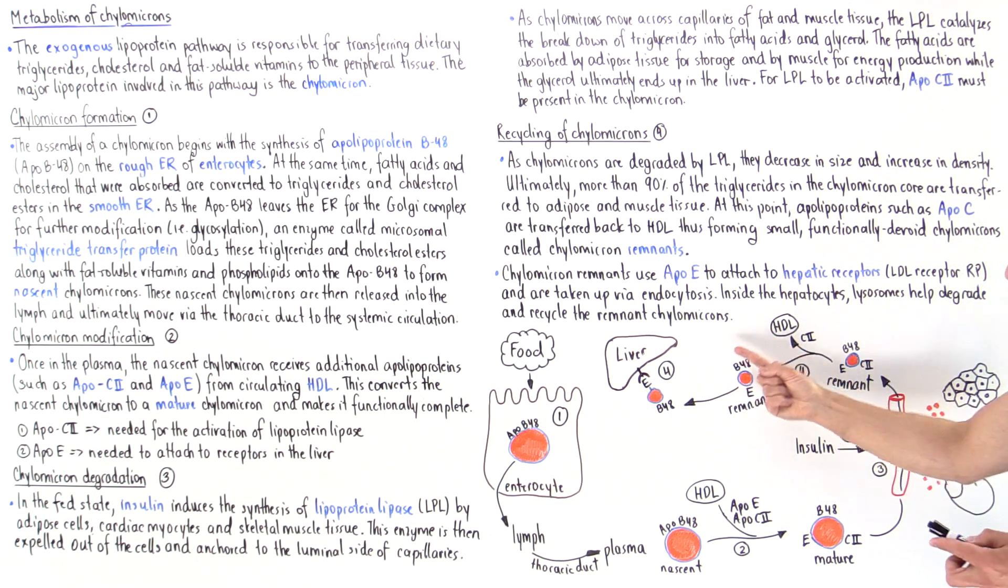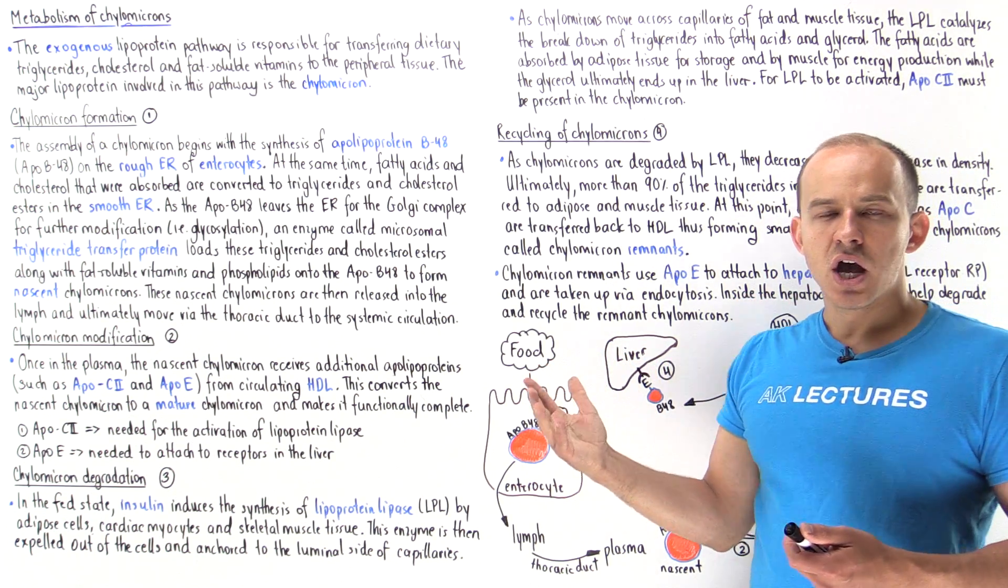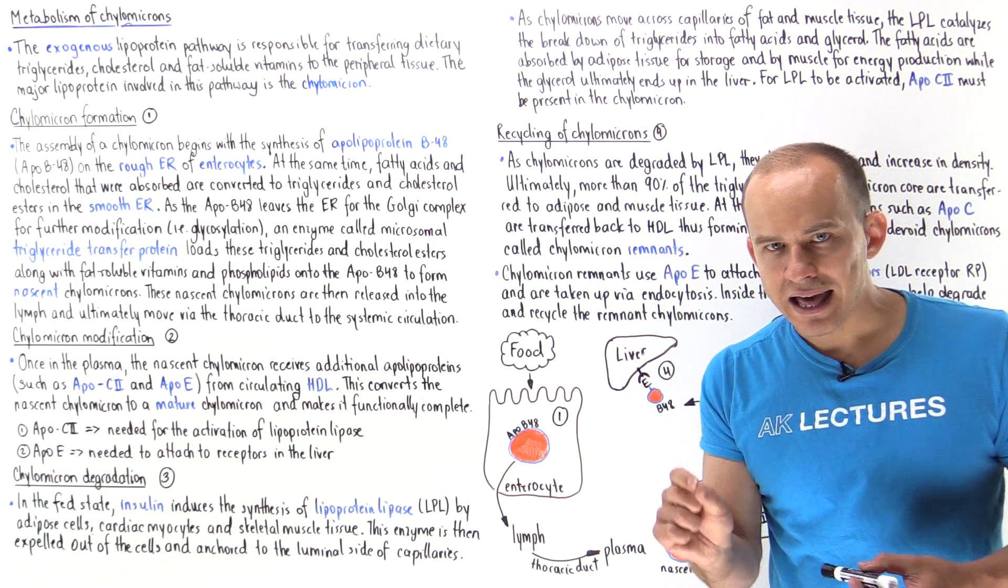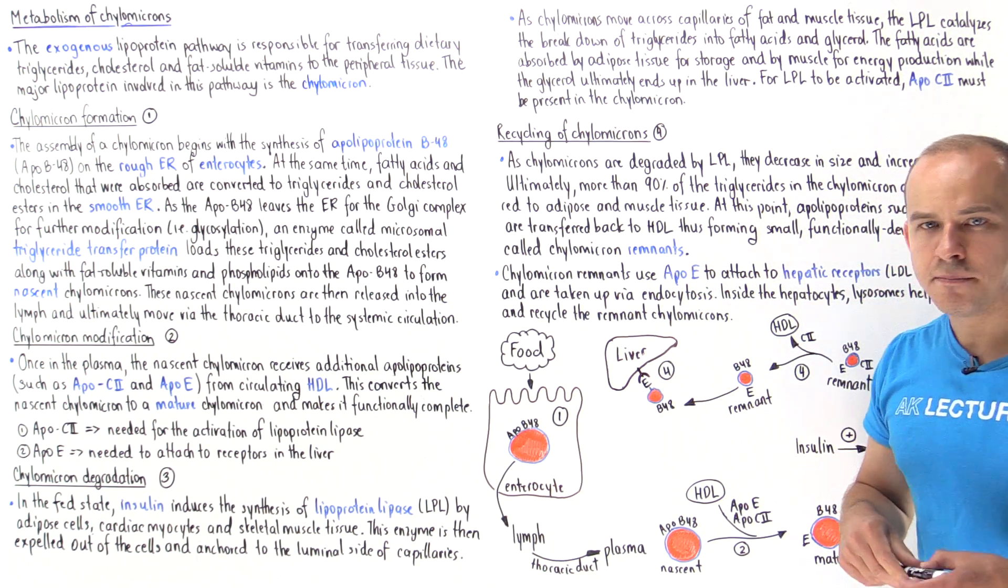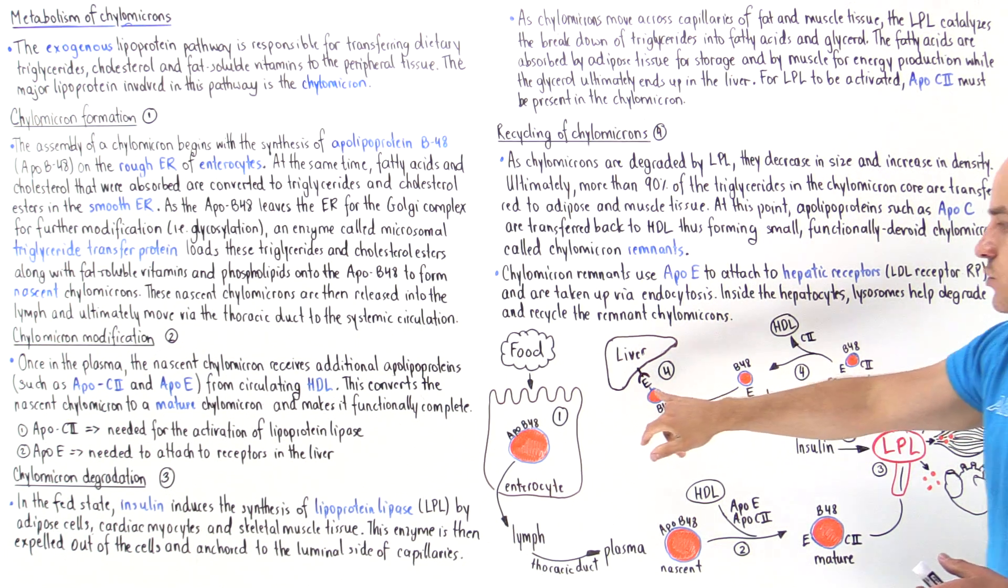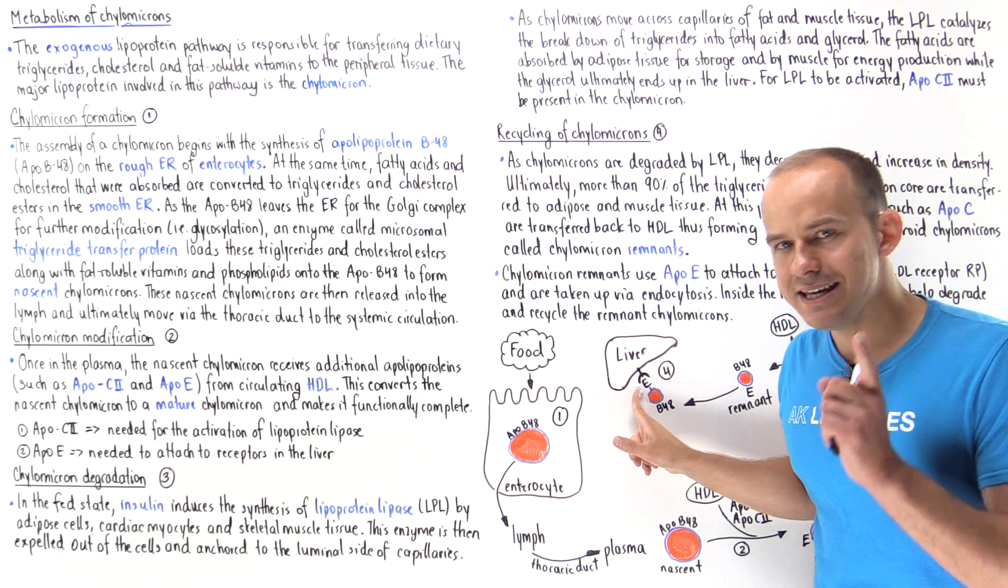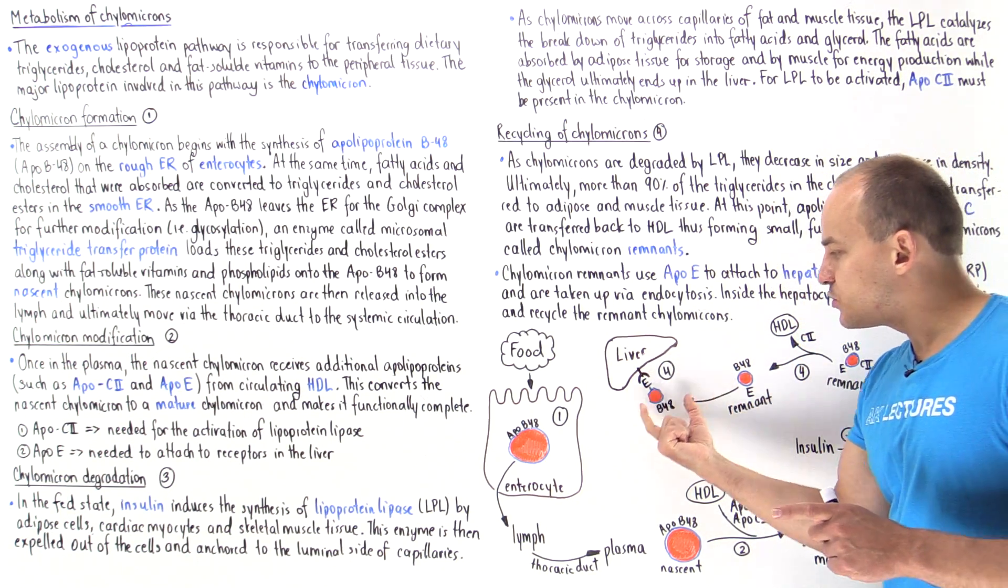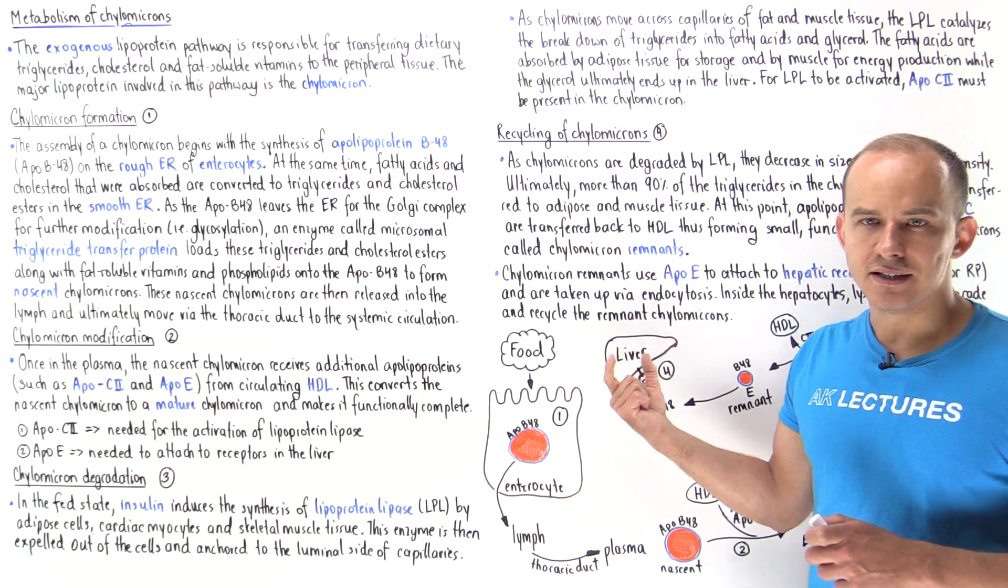Now this remnant chylomicron goes on and attaches onto receptors on hepatocytes in the liver. We have receptors on hepatocytes such as the LDL receptor related peptide that associates with apolipoprotein E. So apolipoprotein E is needed to actually reabsorb these remnant chylomicrons into the liver.